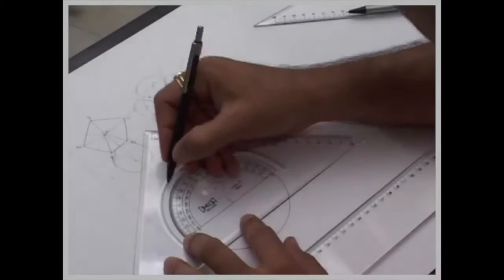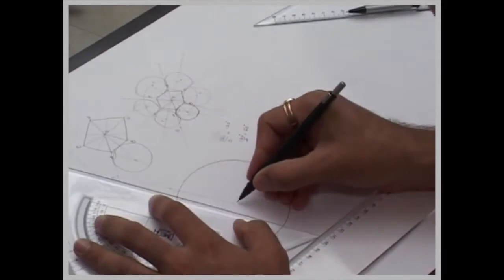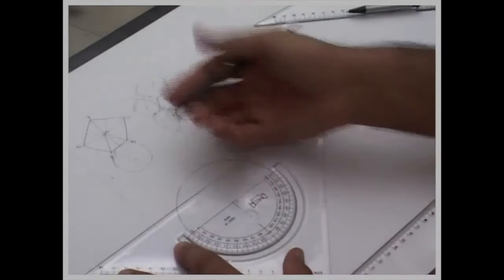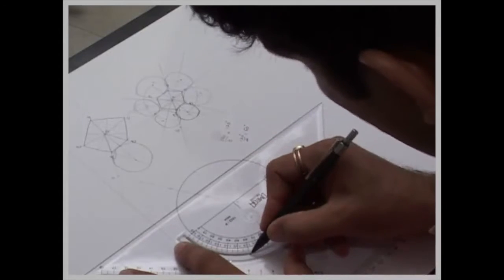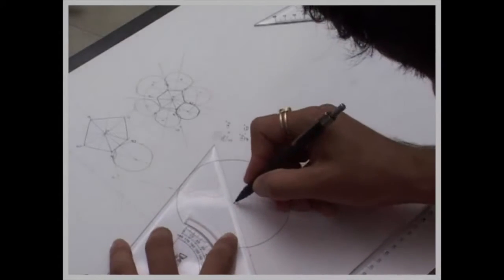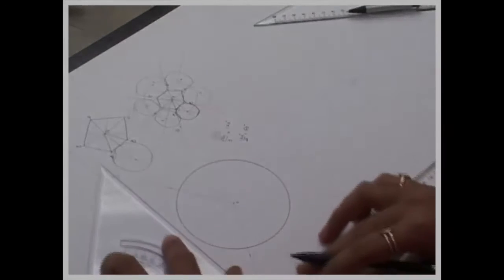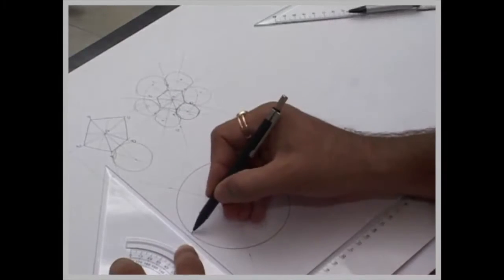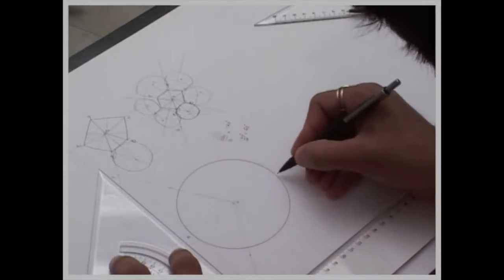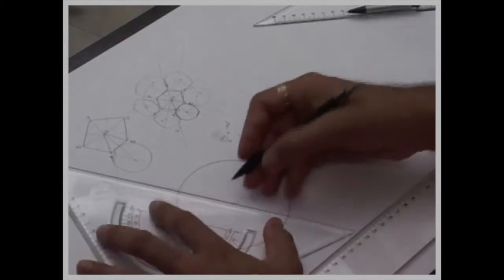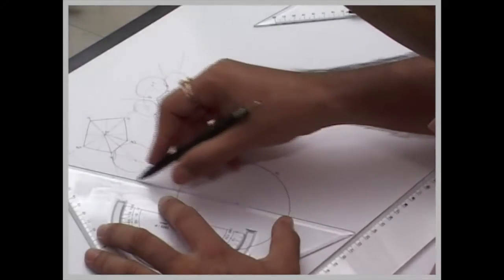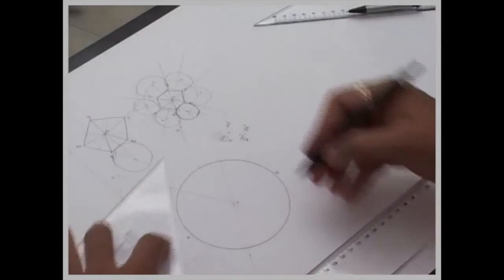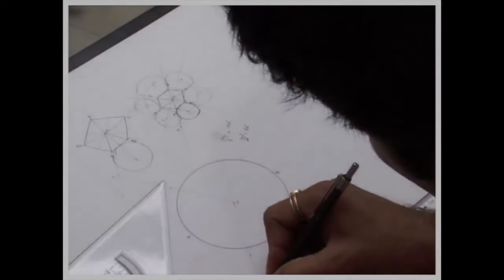So now with a protractor, take 60 degrees on this side as well as downside — you have to take 60 degrees on upside as well as downside. When you draw a vertical line passing through this point, extend the line like this. Give these points as 1 and 2.